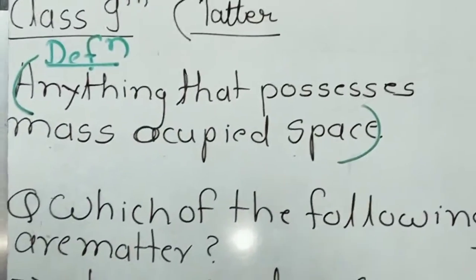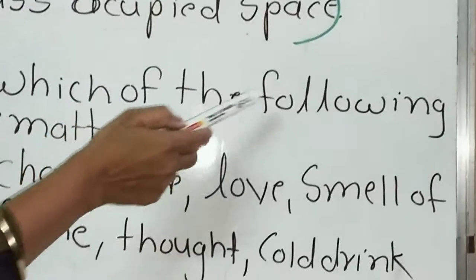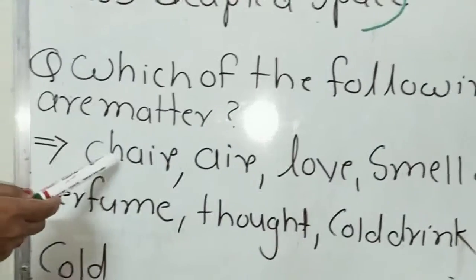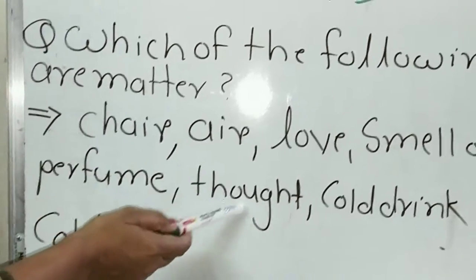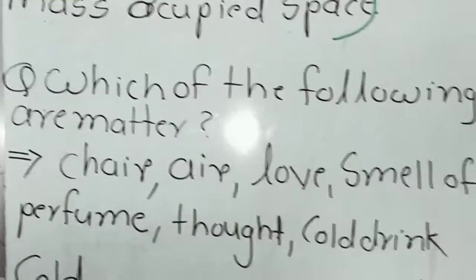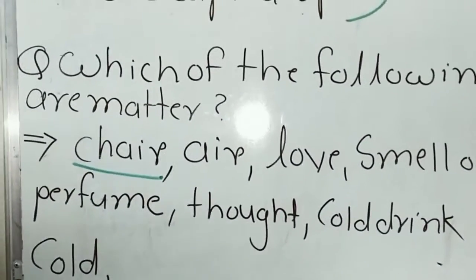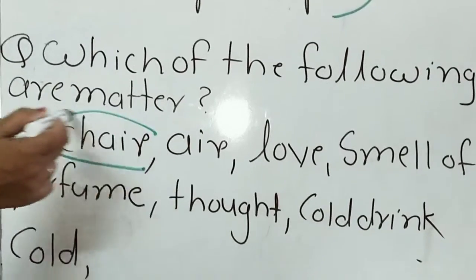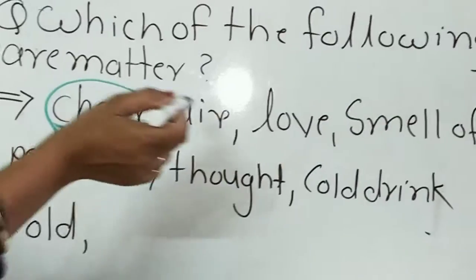There is one question for you: which of the following are matter? Some examples are given — a chair, air, love, smell of perfume, thoughts, cold ring, and cold. We study them one by one. A chair — everyone knows a chair has mass and occupies some space. Therefore, a chair is an example of matter. You take a chair or a table — all these are examples of matter.